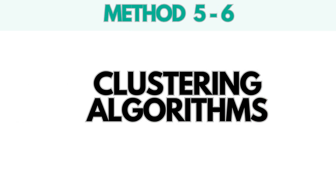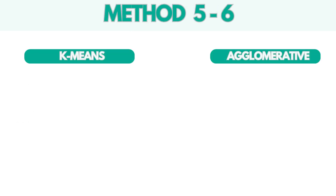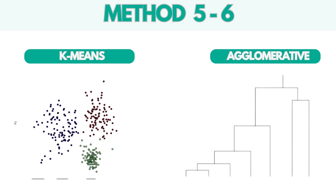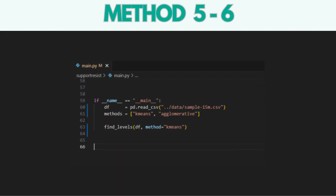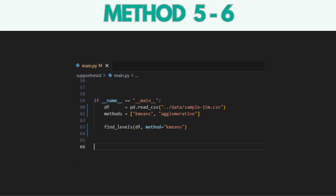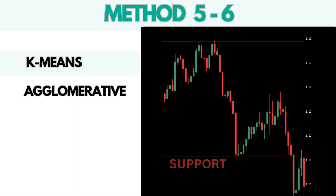The next two methods we will discuss are based on clustering algorithms, specifically K-means and agglomerative clustering. Clustering in statistics is a technique used to group similar data points based on their characteristics. To obtain results using these clustering algorithms, you can specify K-means or agglomerative as the method parameter in the FindLevels function. Here are the results for these two clustering algorithms.